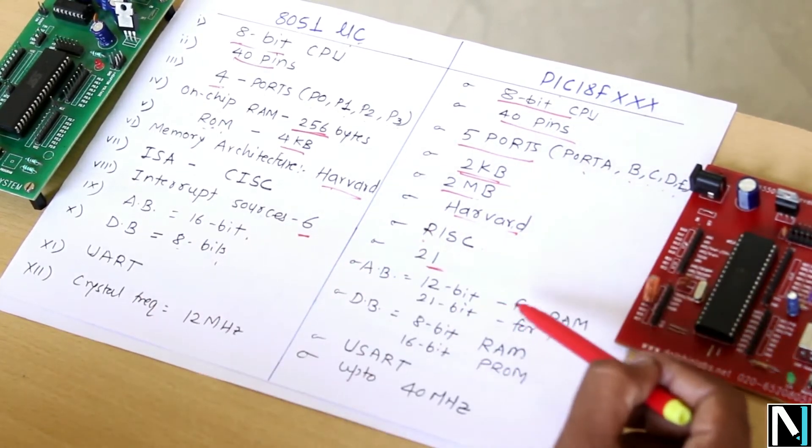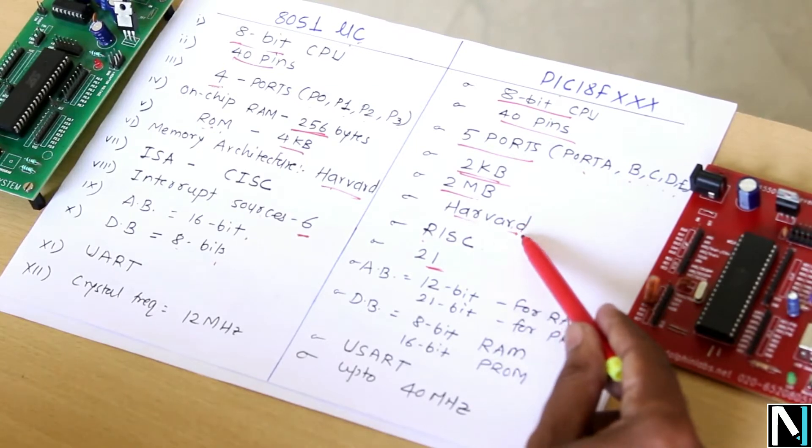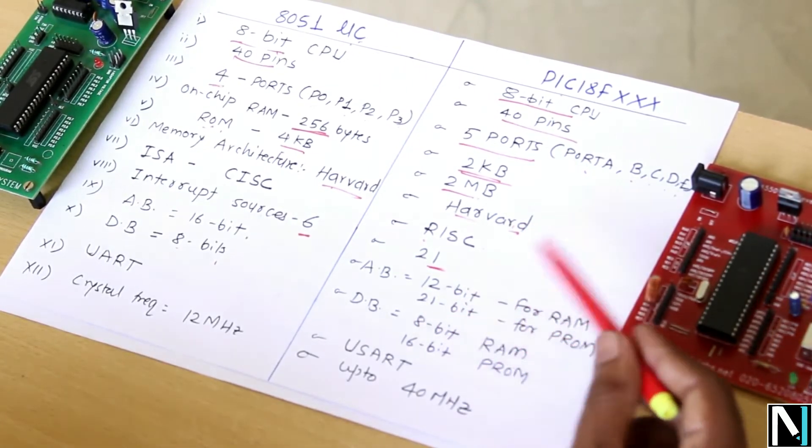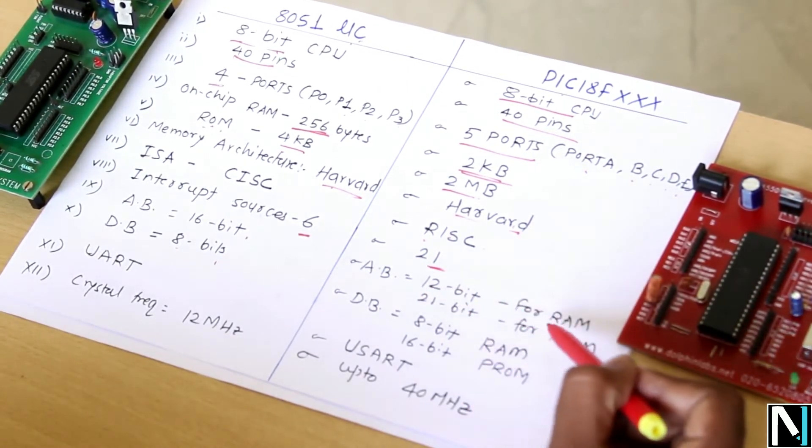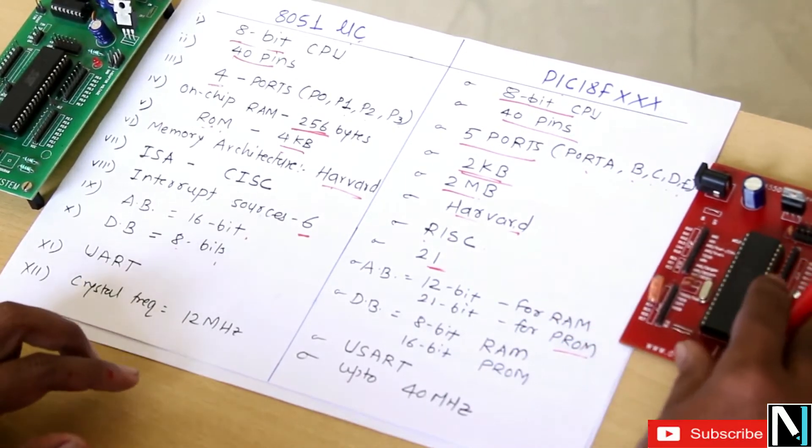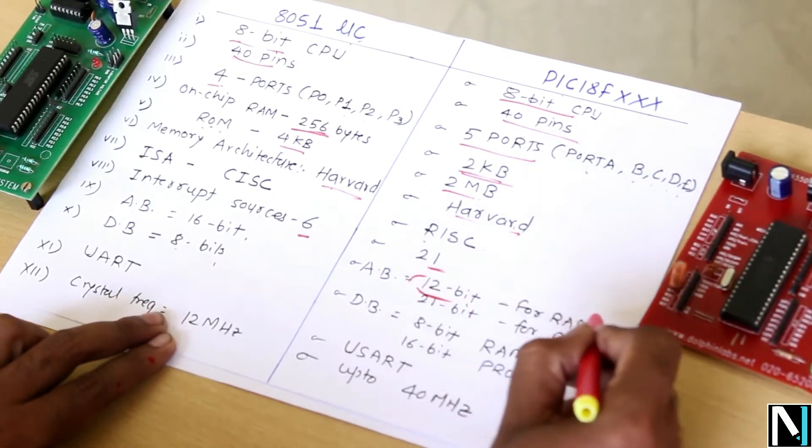In case of PIC microcontroller, there is a twist. Here, as it is using Harvard architecture, address bus and data bus widths are different. 12 bits are used for the RAM. 21-bit address bus is for the programmable ROM. So that's why, if you simply want to remember this, 12 bits - 2 raise to 12 will give rise to 2 kilobytes of internal RAM.